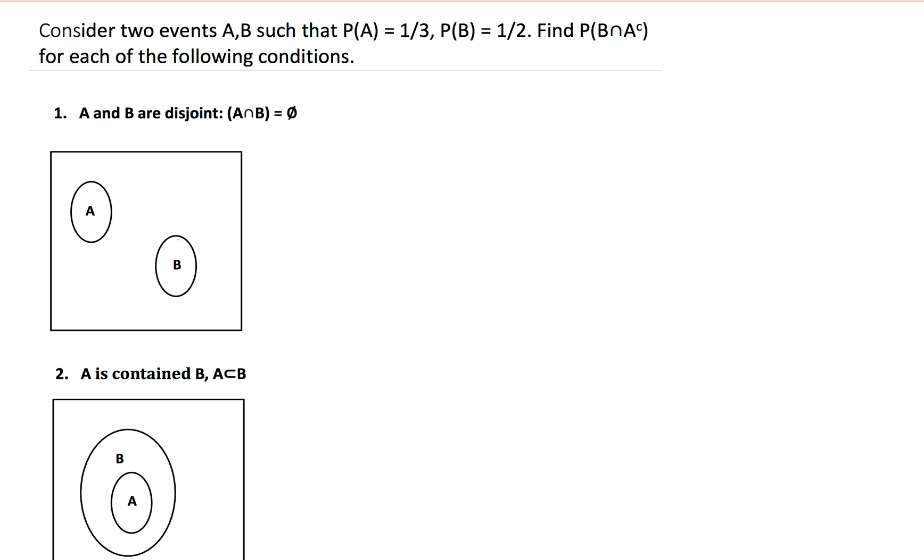I've drawn a Venn diagram here, and essentially each one of these conditions are going to be done a little bit differently, but it's a different way to think about each one of these set theory problems. So A and B are disjoint, and the intersection is the empty set.